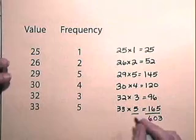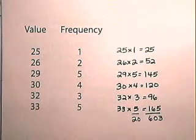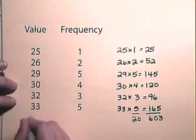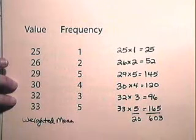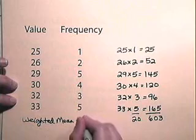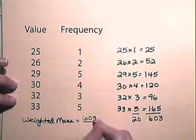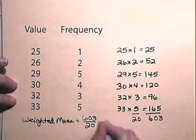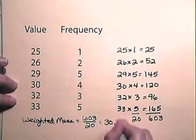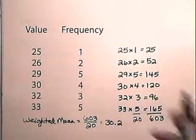So the weighted mean will be 603 divided by 20, which is 30.2. So the weighted mean for all of these numbers is 30.2.